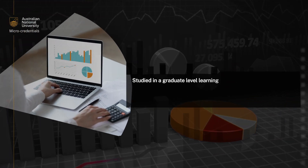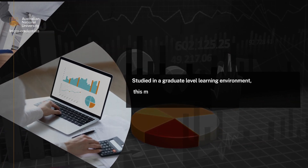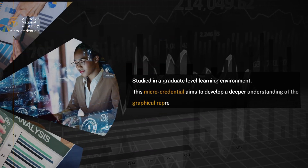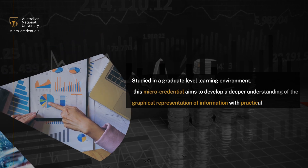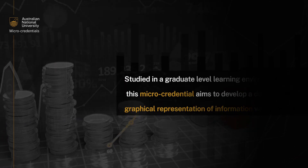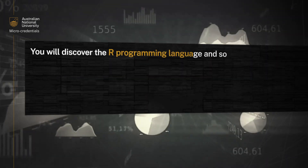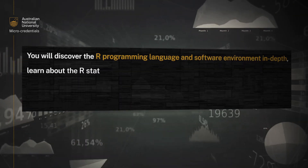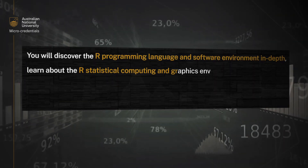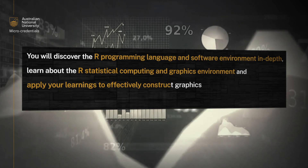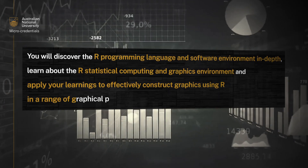Studied in a graduate level learning environment, this micro-credential aims to develop a deeper understanding of the graphical representation of information with practical skills. You will discover the R programming language and software environment in depth, learn about the R statistical computing and graphics environment and apply your learnings to effectively construct graphics using R in a range of graphical presentations.